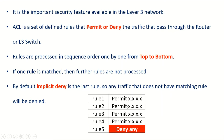For example, when traffic reaches rule two and matches that rule, the traffic will be permitted and allowed to pass through the router. If it does not match any of the rules, then by default it will come to the last rule and get dropped, because the last rule of any ACL is implicit deny — which means deny any packet.